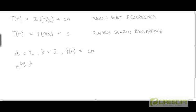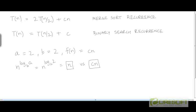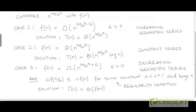What is n to the power log base b of a? It is n to the power log base 2 of 2, which is n. If we compare this function with f(n), both functions have the same rate of growth, so we are in Case 2 of Master Theorem. The solution is T(n) = Θ(n^(log_b a) · log n).